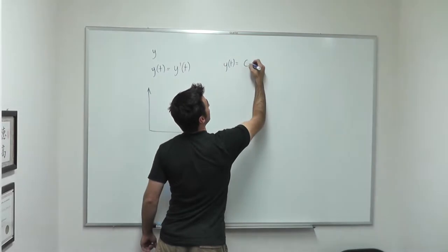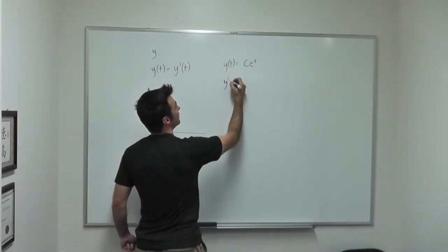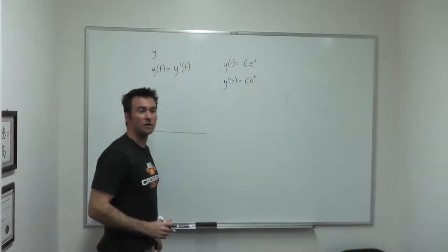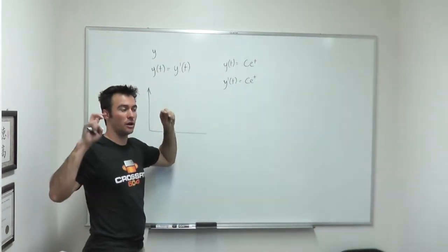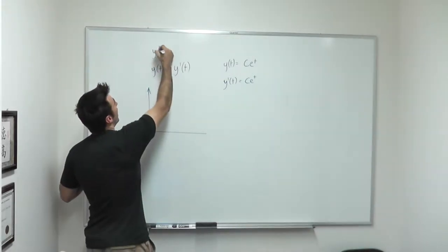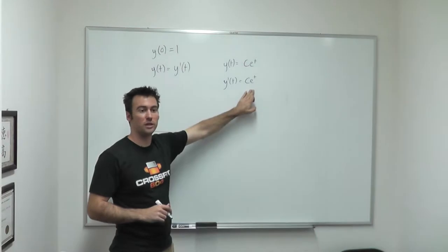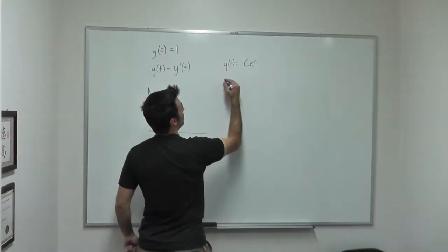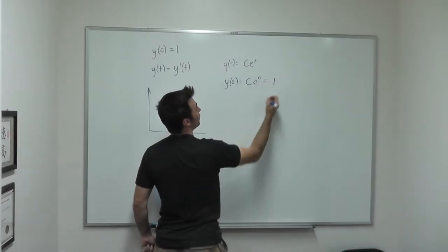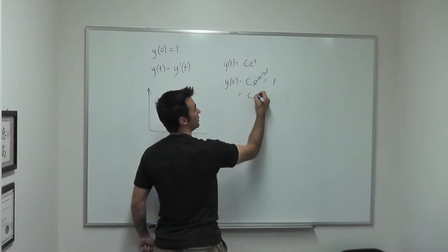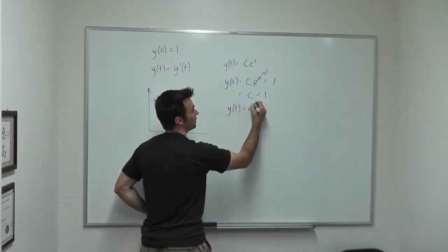So the general solution is c times e to the t, right? Because y prime is also equal to c e to the t. That makes sense. So this is the general solution. You turn it into what's called an initial value problem when you specify that y at time 0 has to be equal to, say, 1. This helps you lock down what the value of c needs to be. We plug that in: y(0) equals c times e to the 0 equals 1, so c is equal to 1.